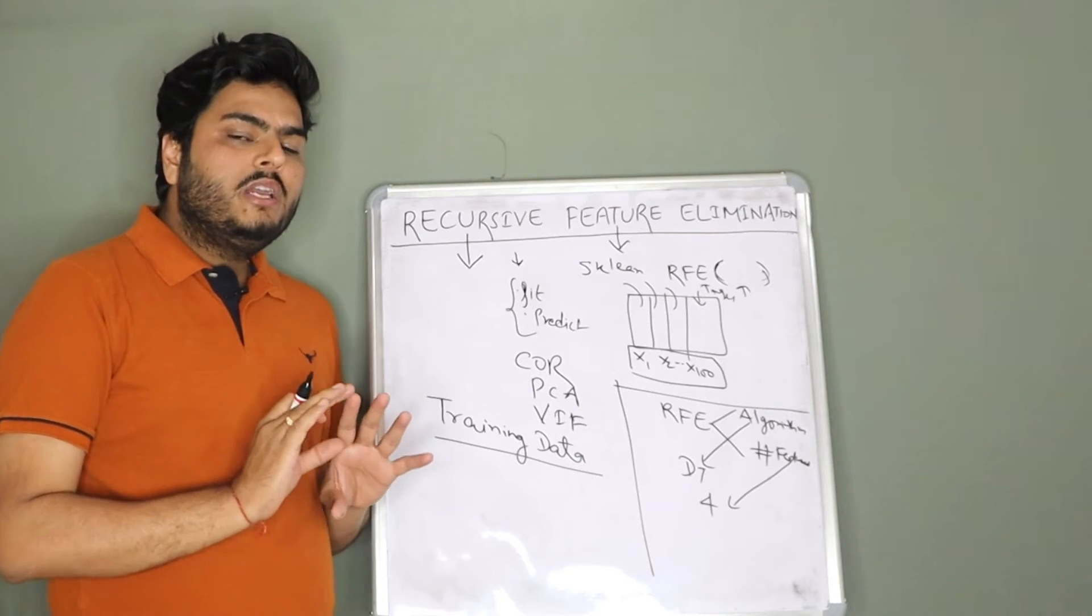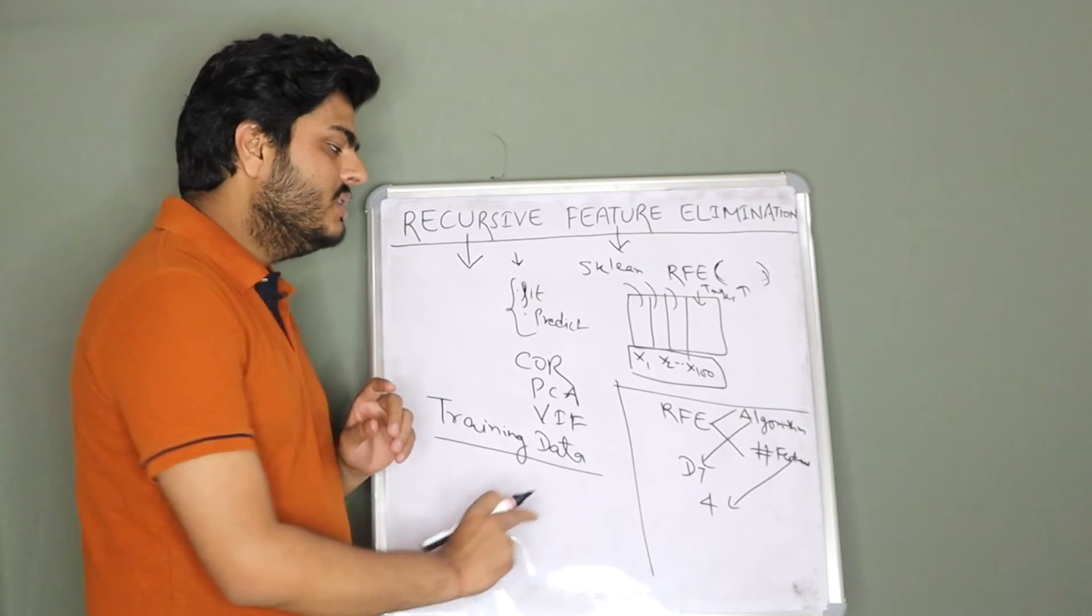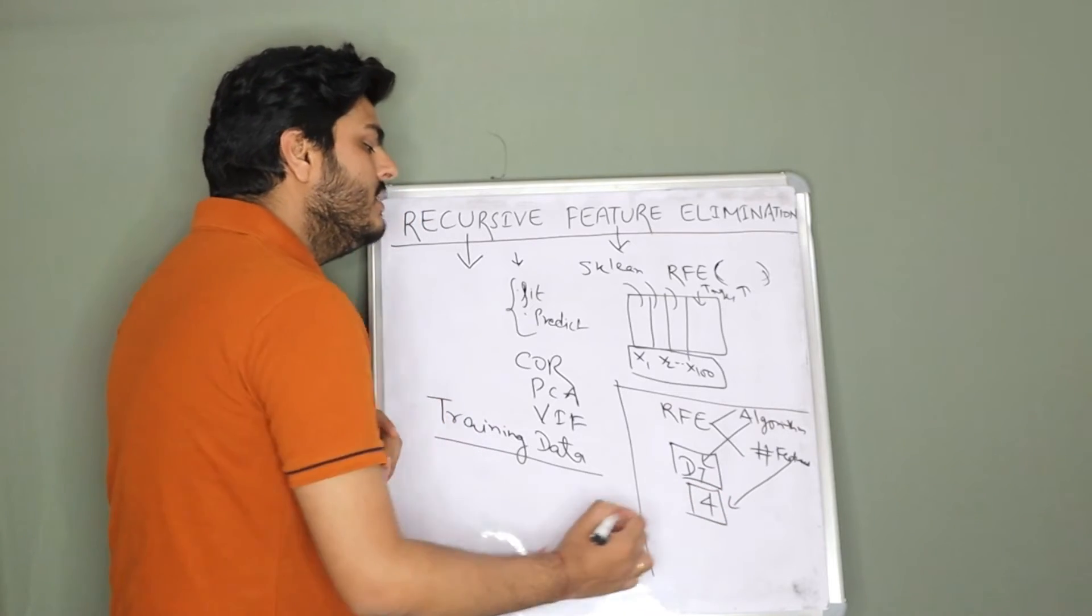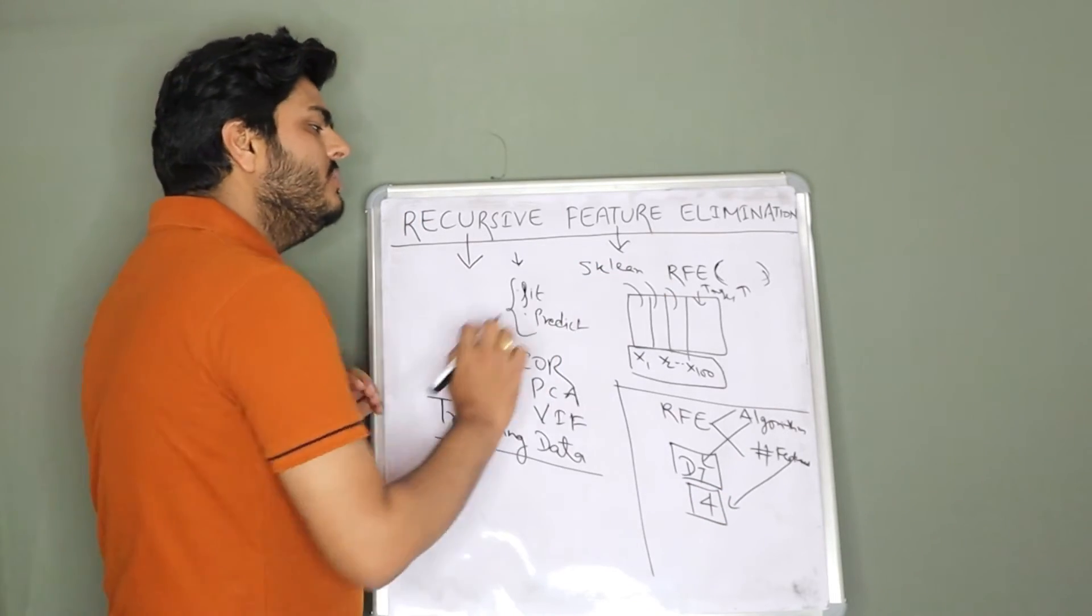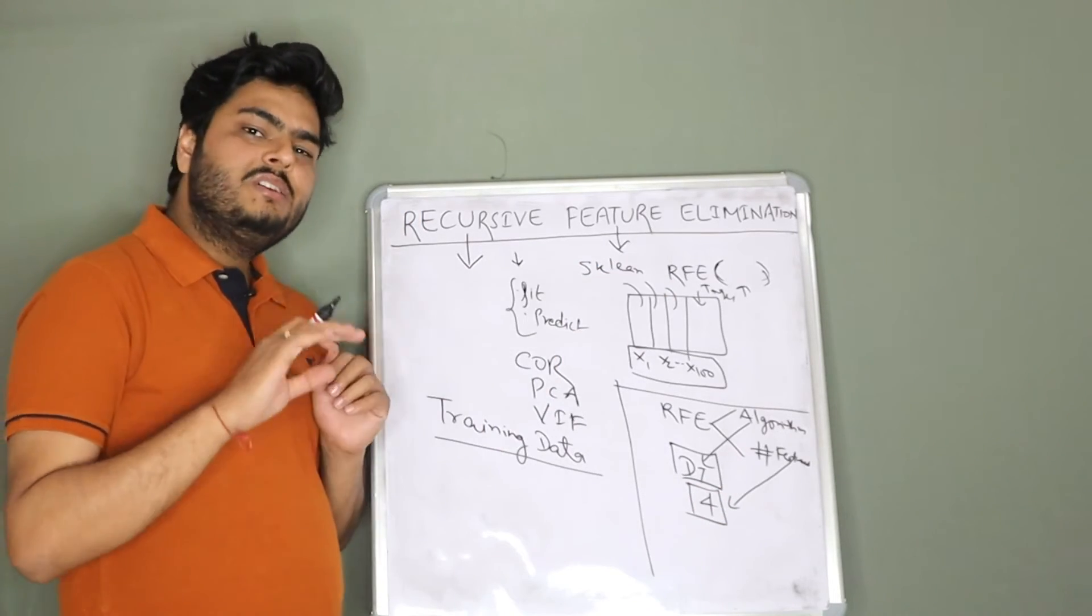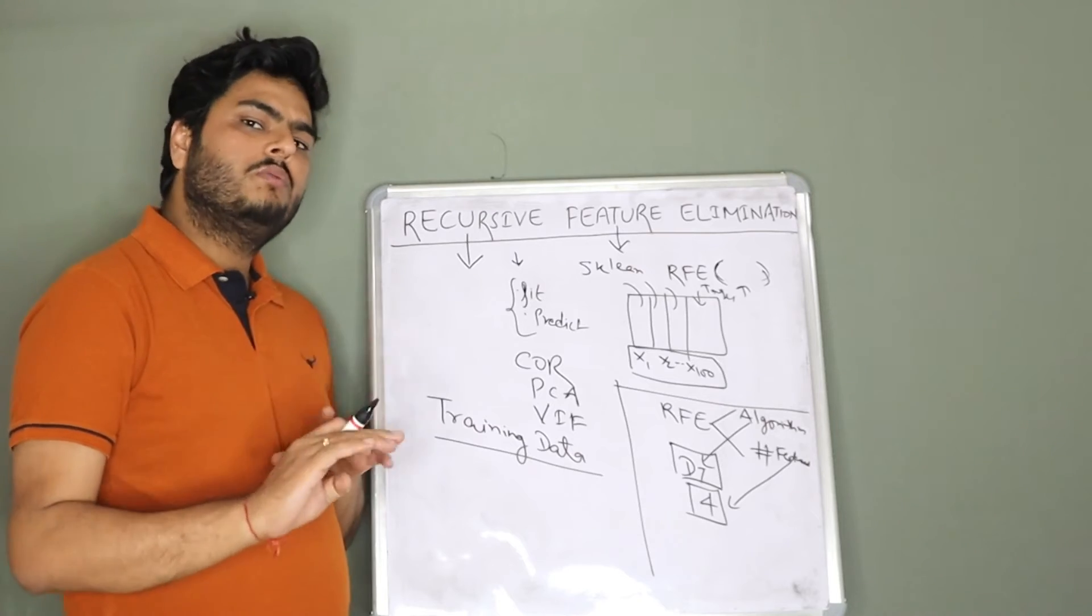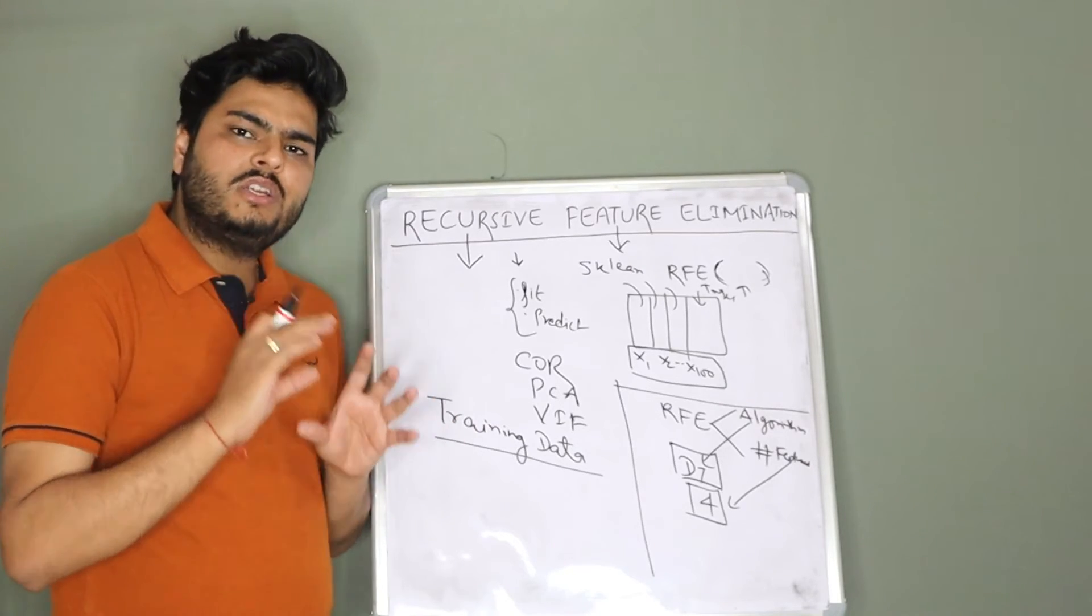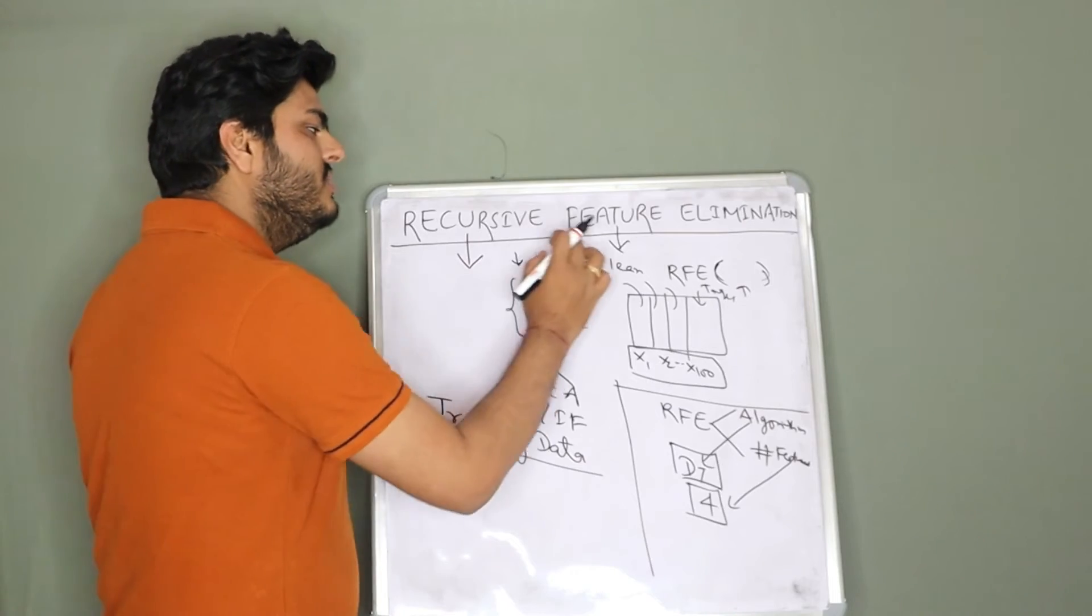It will vary based on what algorithm you are giving and how many features you want. Based on these two, this RFE will give you, hey you know what these are the four most important features for you. Take it and train your model. That is in nutshell what is recursive feature elimination.